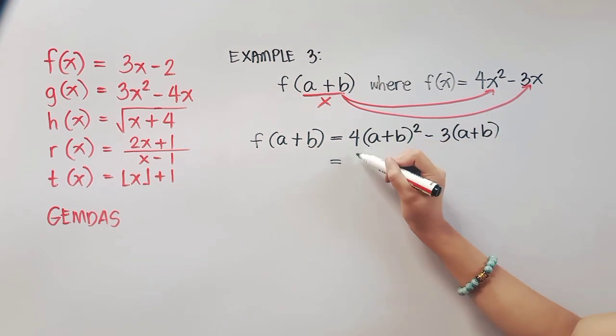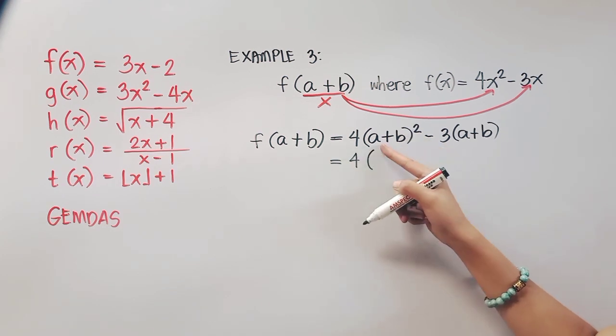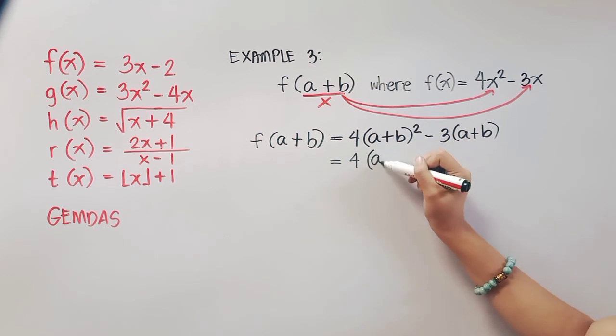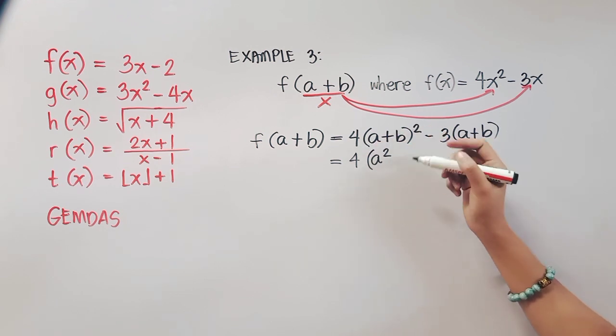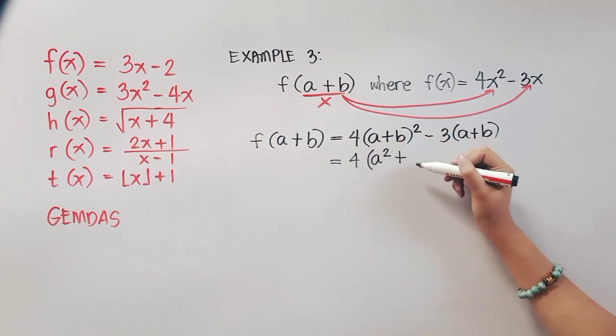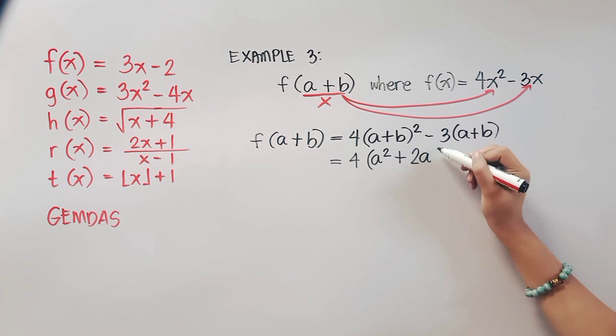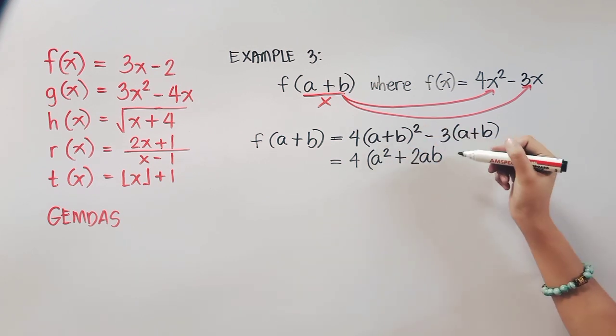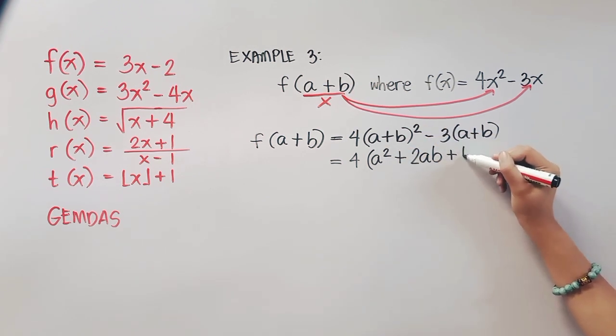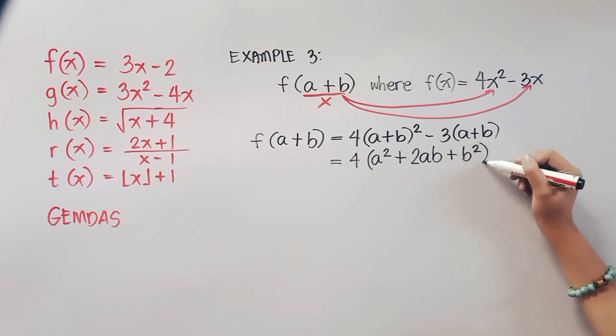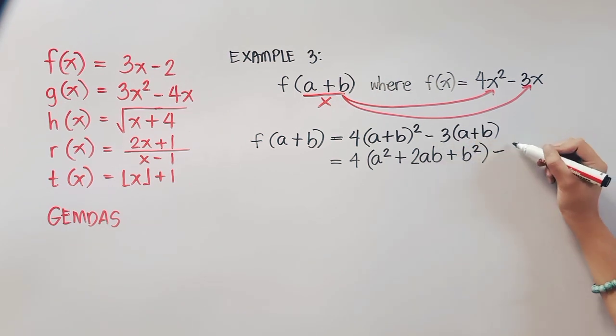Now we have here an exponent of 2. So that's a raised to 2 is a squared, and then a times b times 2, that's 2ab. And then b raised to 2, that's positive b squared. Now distribute negative 3, so that's negative 3a and then negative 3b.